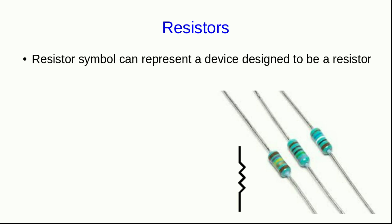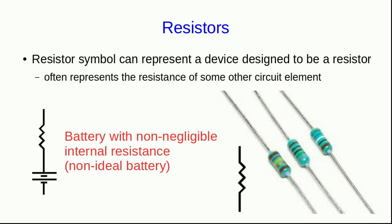However, anything with current flowing through it has a resistance, and so often when we use the resistor symbol, we're not actually talking about a device that's intended to be a resistor. We may be talking about the resistance of some other device. For example, we could be talking about a non-ideal battery, in other words, a battery with a non-negligible internal resistance, in which case we would draw on the circuit diagram a battery and its resistance in series with each other.